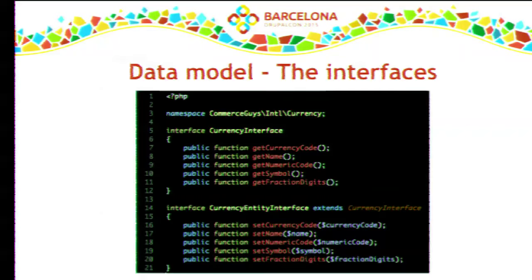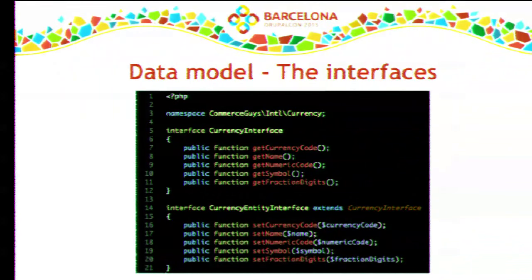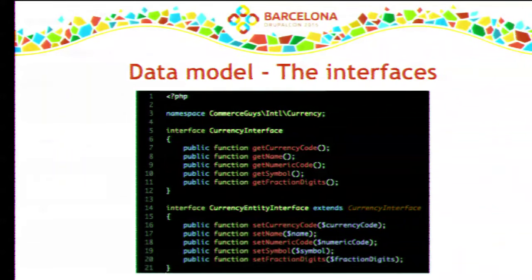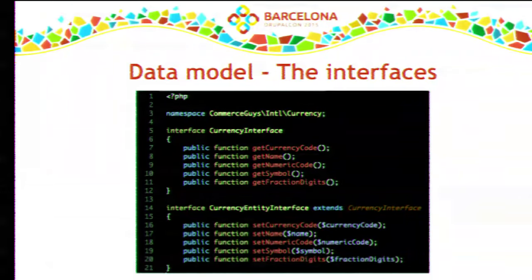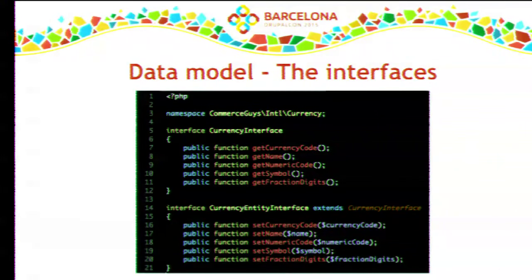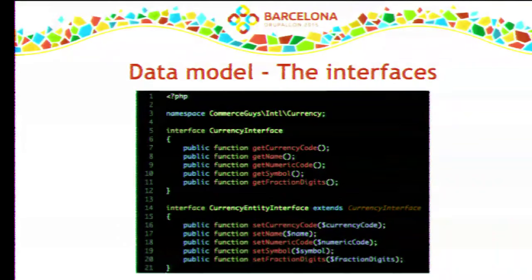Let's look at how a single library looks. We start with the interface. For a currency, we start with a currency interface that has only getters — the basic contract the currency needs to fulfill: currency code, name, symbol. There are no setters because we don't need to make assumptions for how the object will be populated. It might be a value object or a database entity. This also allows the parent application to have setters with different type hints — for example, if the currency interface type-hints against the country interface, but the parent application extends that interface.